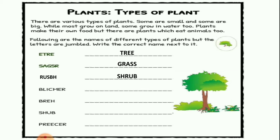Next is B-L-I-C-M-E-R. Which word is this? It needs support to grow — we have already learned this. Which type of plant is this? It is climber. Write C-L-I-M-B-E-R. Climber.